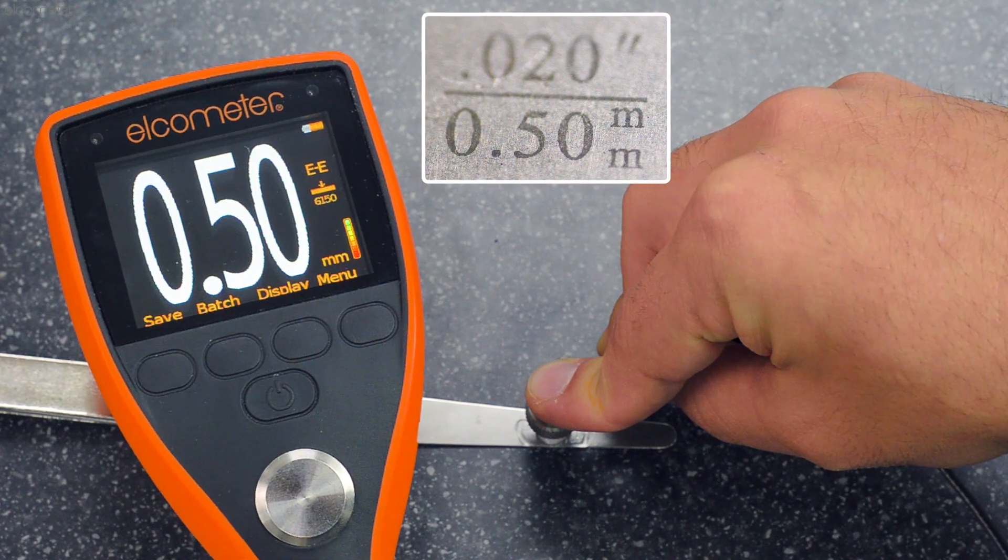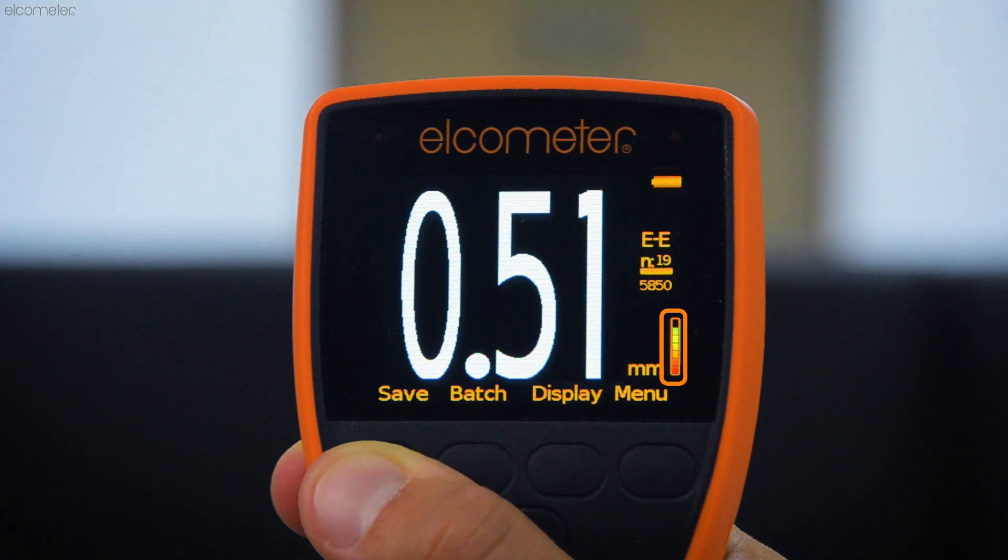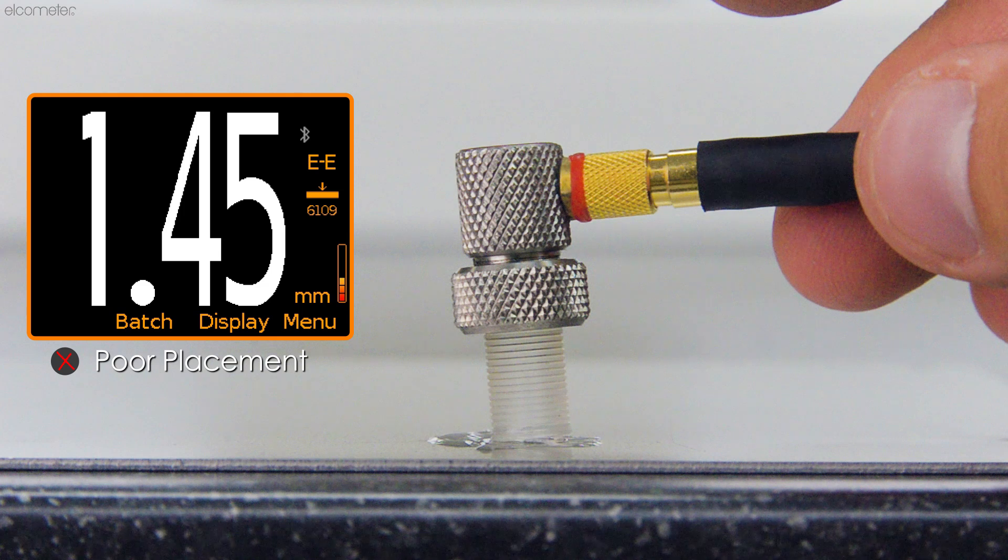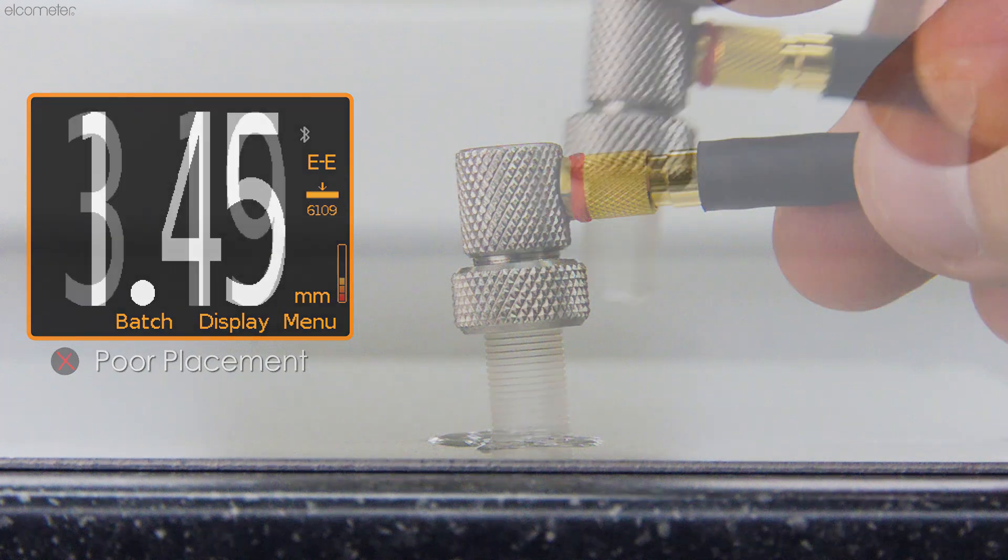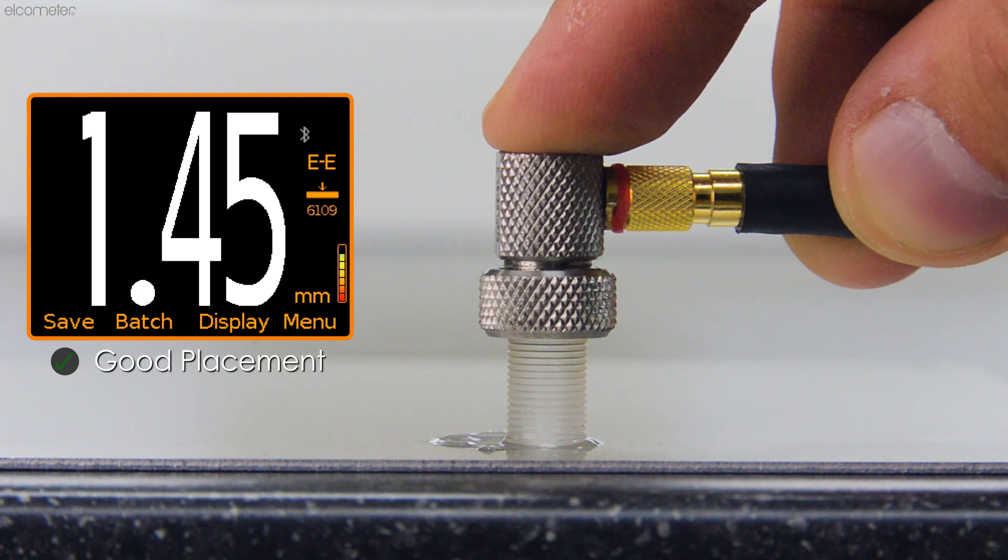When the transducer is placed on the material, the reading stability indicator shows how strong the ultrasonic signal is. A red or orange bar means you may need to adjust how you're holding the transducer or where on the material you're placing it, while a full bar means a strong signal, ensuring accurate, reliable measurements.